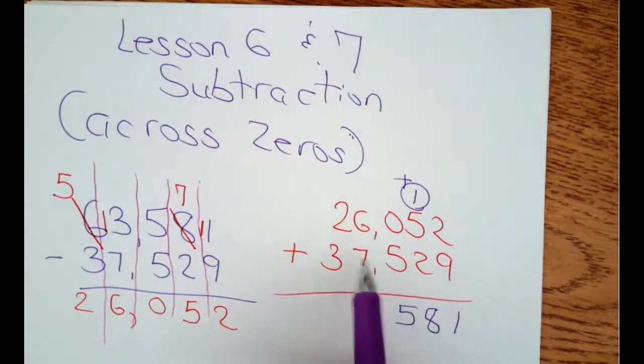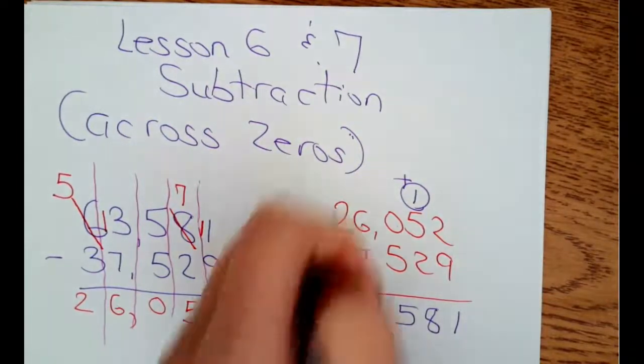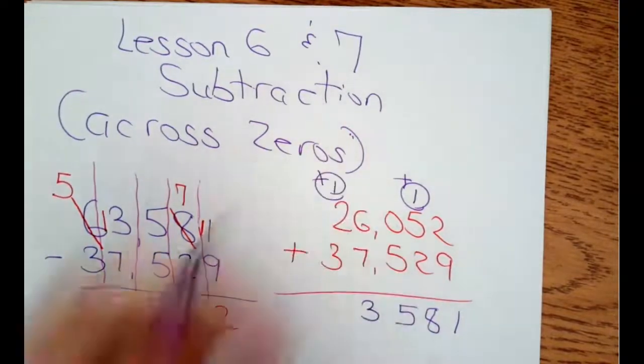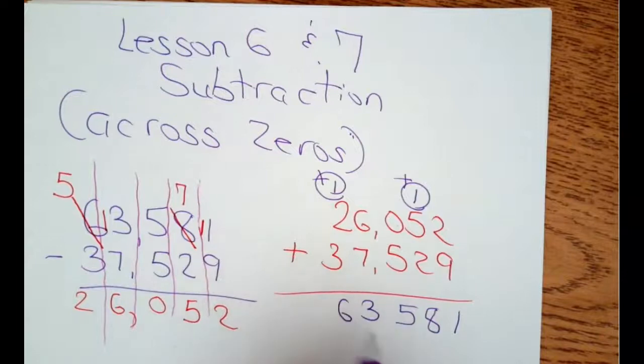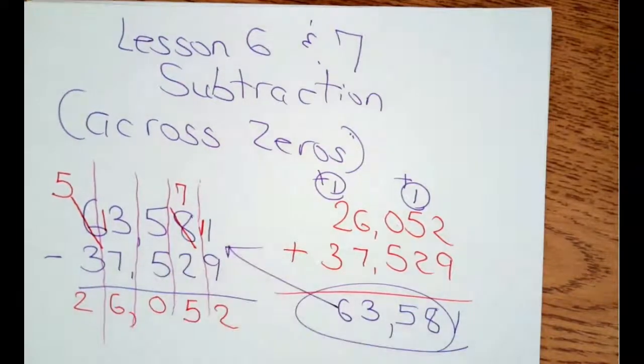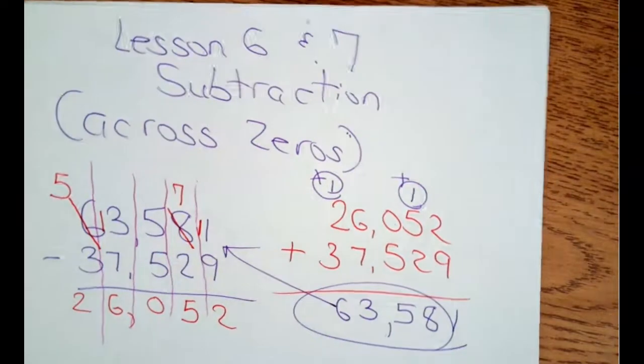Six plus seven is thirteen. Fifteen. Bring the one over. Regroup it. And then this equals two plus one plus three is six. Is this what I started out with? Yes. So then you've done a good job.